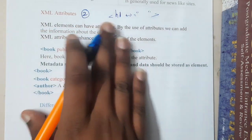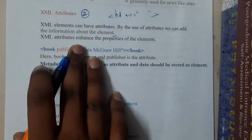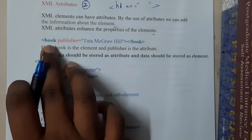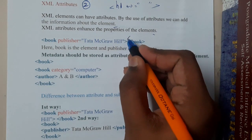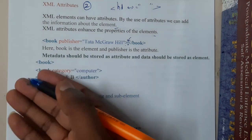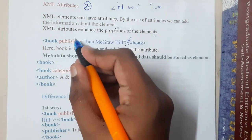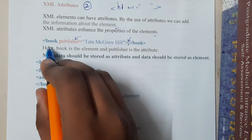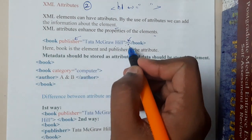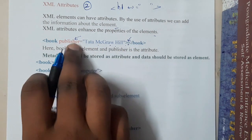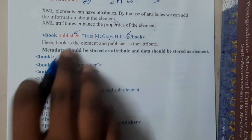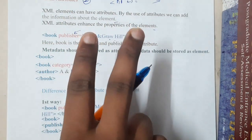XML attributes enhance the properties of elements. Take the example of a book — inside the book element you write the book name, which could be Computer Science, Networking, or Web Programming. The publisher name is written inside the XML tag as an attribute. This is user-defined — whatever you write on your own is your attribute. Once we go through the examples you'll get a clear idea.